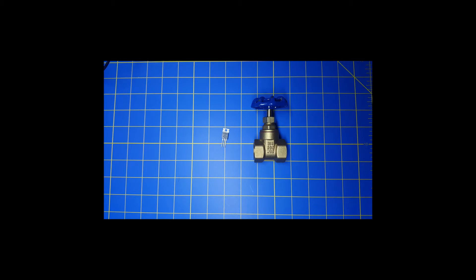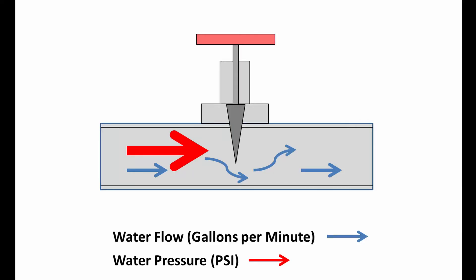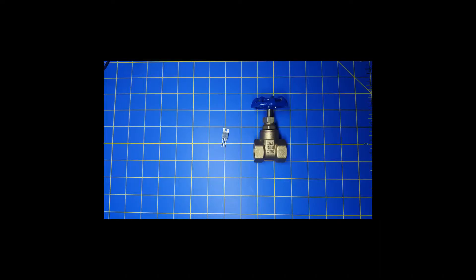The flow of water in a pipe is very analogous to the flow of electricity in a wire. Flow of water in a pipe, measured in gallons per minute, is very similar to the amps or rate of current flow in an electrical wire. So we've got voltage and current that are very similar in both worlds. Resistance, or blocking the flow, is also very similar in both worlds.